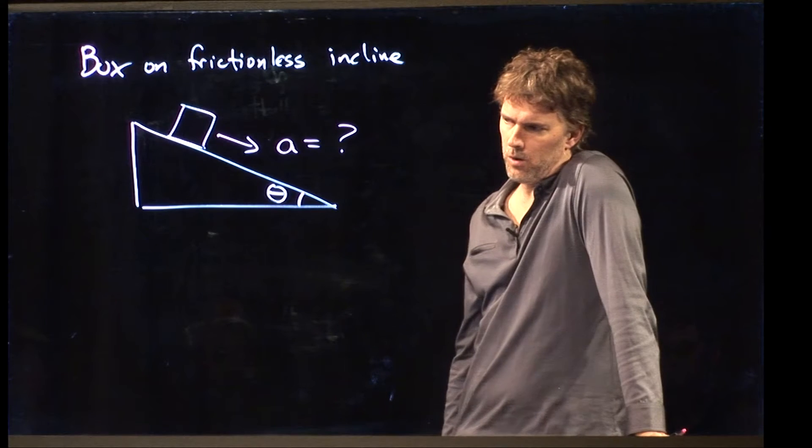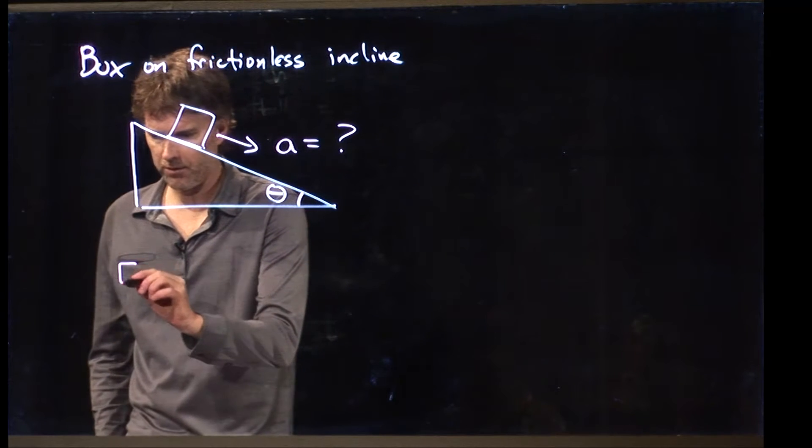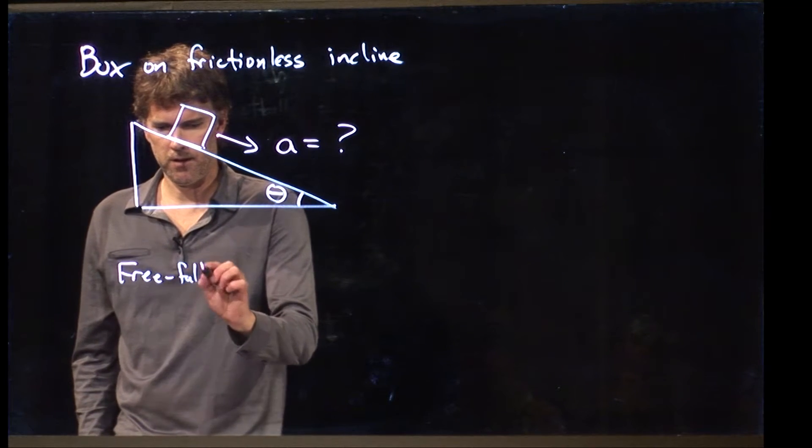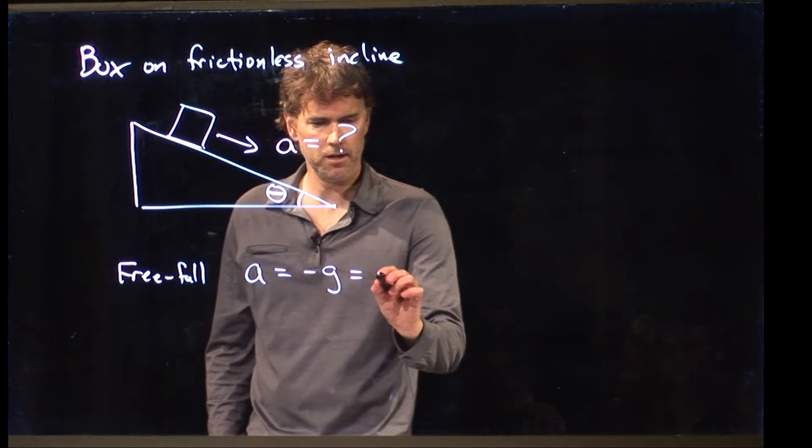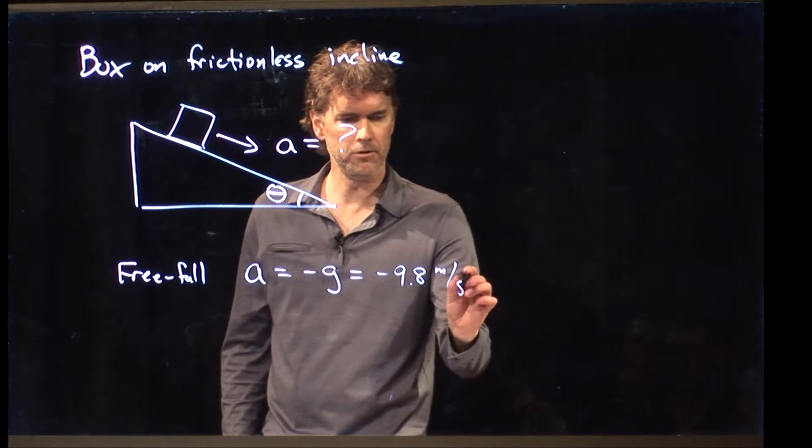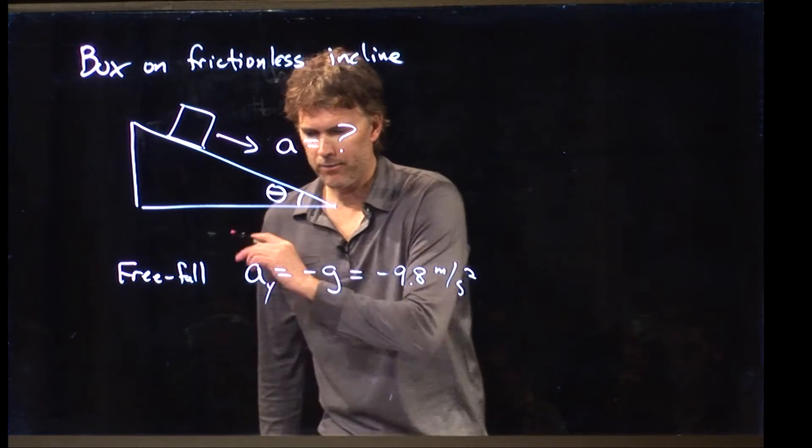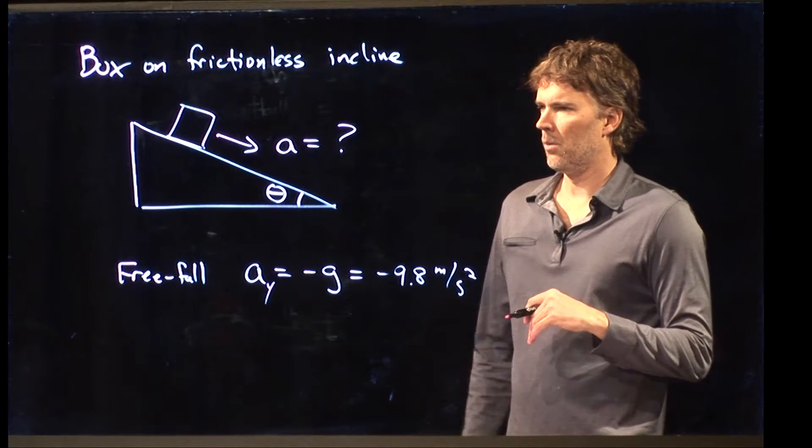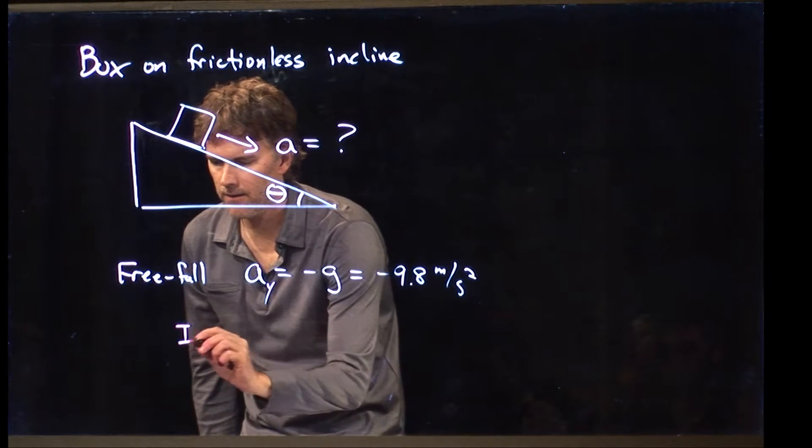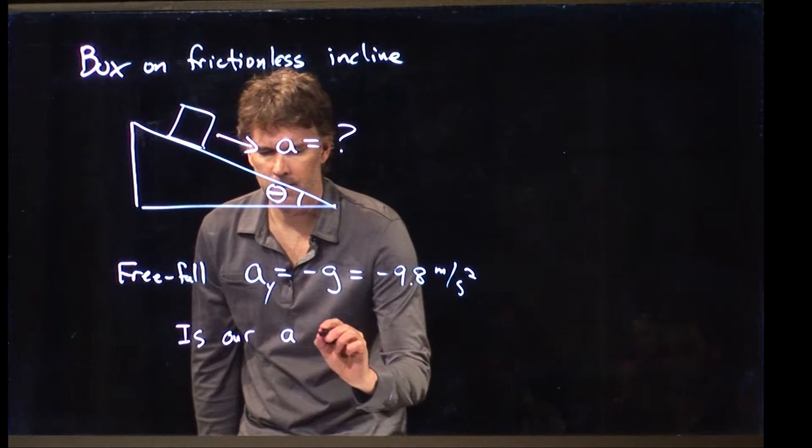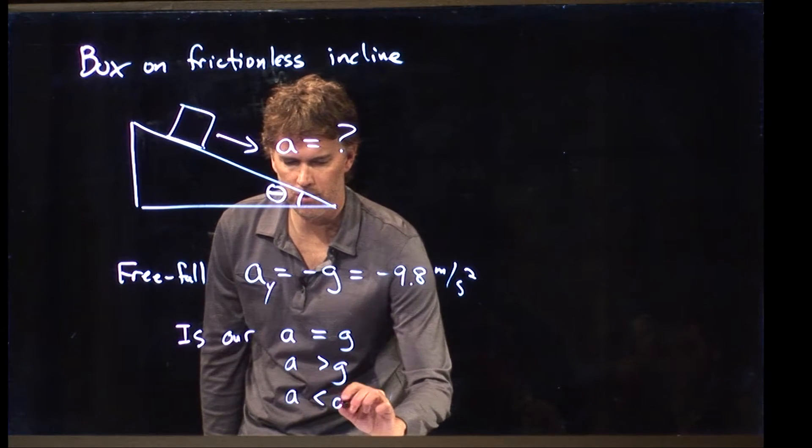Now, we need to figure out what this acceleration is down the incline. So what do we know about acceleration? What we know is that if something falls straight down, then the acceleration is negative g, negative 9.8 meters per second squared. And that would be a sub y, if we're talking about the vertical direction. What about the a that we have here?